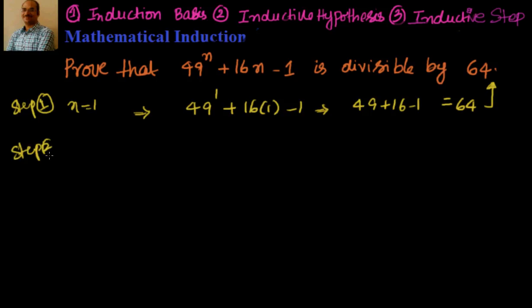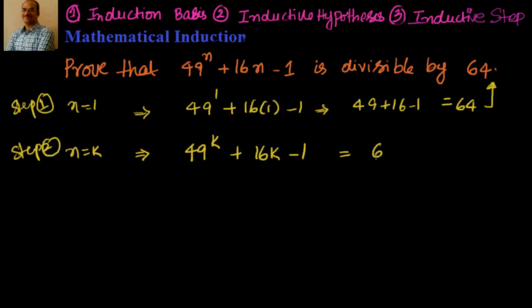We have to assume that it's true for n equal to k. If I assume it's true for n equal to k, the expression will be 49 to the power of k plus 16k minus 1. Let us say this is nothing but equal to 64 into some value p. That's how we have assumed that this is a multiple of 64. Now let's go to step 3.